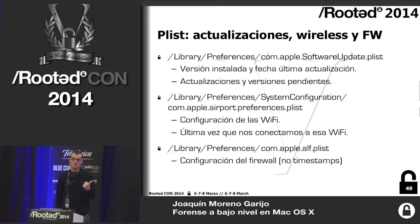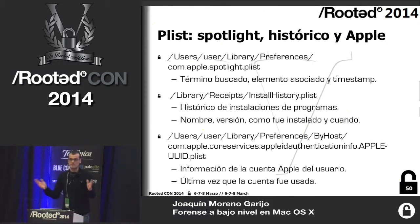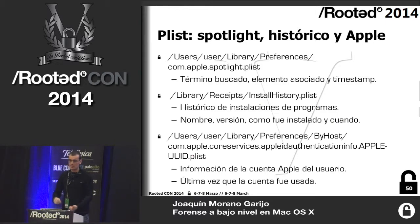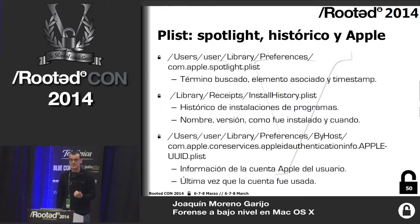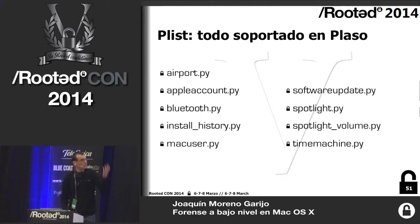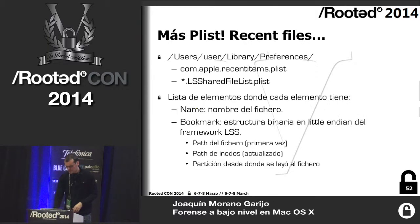One Plist doesn't have a timestamp but is important because it tells us about the firewall configuration rules. Spotlight — the search feature on Mac — tells us the last time a search term was entered and what the reference was. Then there is historical data about the number of applications stored, and Apple account information. All of this is supported in PLASO — you can access the source code.